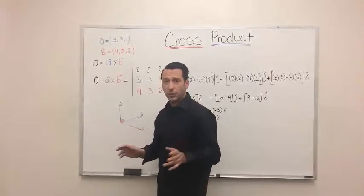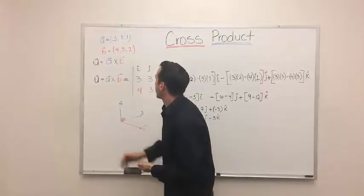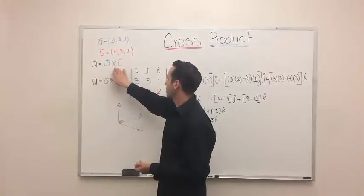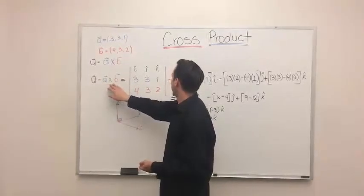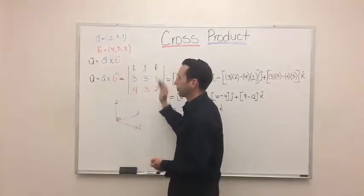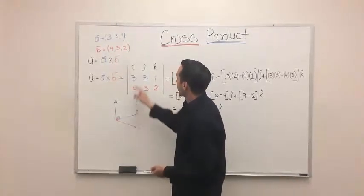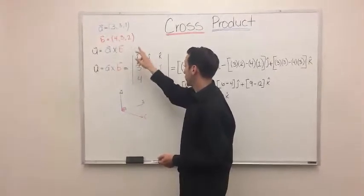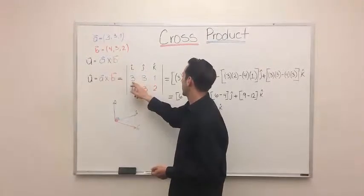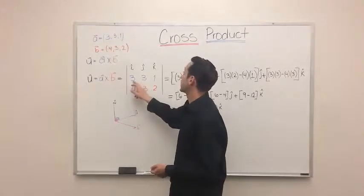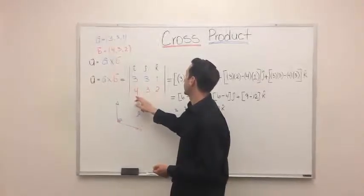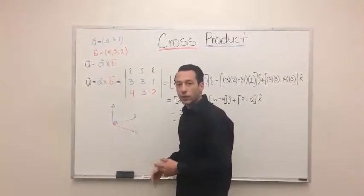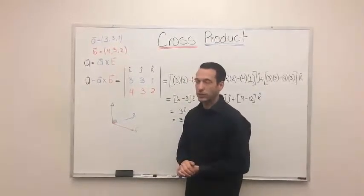So to set up a cross product problem, you have your two vectors. You define what you want to do. And here, we set up a chart. First, we put the I, J, and K components at the top. Then we put the X, Y, and Z, or I, J, and K portions of the vector. So here we have 3, 3, and 1. 4, 3, and 2. And the cross product really is just what it sounds like.